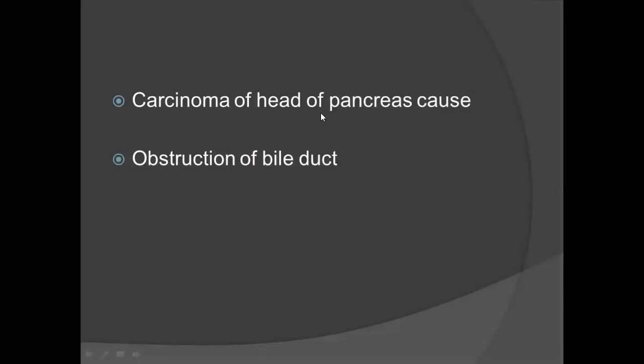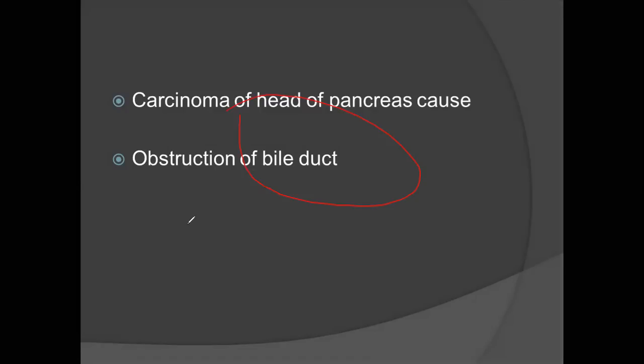Carcinoma of the head of the pancreas causes obstruction of the bile duct. Other possibilities: bile duct obstructions can be asked from different causes. The superior mesenteric artery can obstruct the third part of the duodenum. Another important MCQ is: if the posterior part of the first part of the duodenum has an ulcer, which artery is most likely damaged? The answer is the gastroduodenal artery.